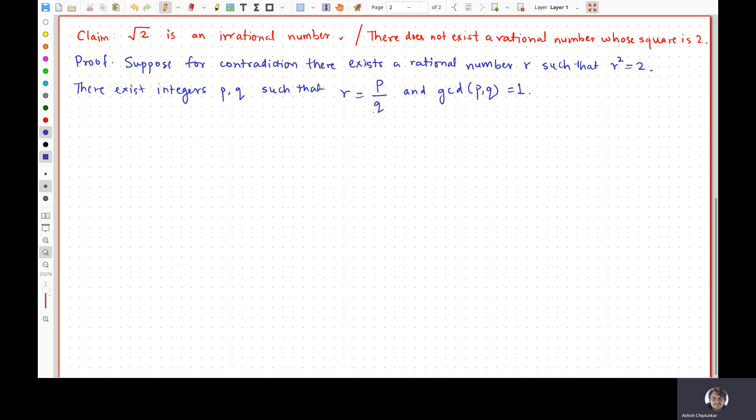Now, because R squared is equal to 2, what do you get? Therefore, P squared over Q squared is equal to 2 and therefore P squared is equal to 2 Q squared. What does this mean? Look, the right hand side of this equality is even because there is a 2 over here. So the left hand side must be even, right? Therefore, P is even.